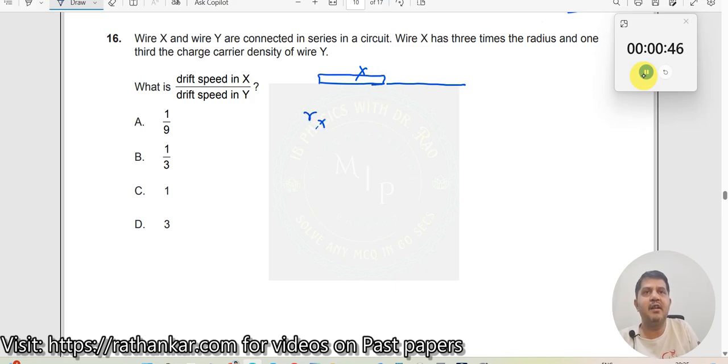I will write r_x is equal to three times r_y and one third the charge density n_x is equal to one third the charge density of n_y. Now when wire is connected in series, the current will be the same i_x is equal to i_y.